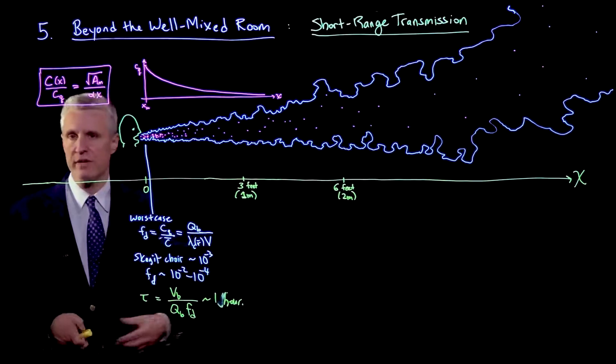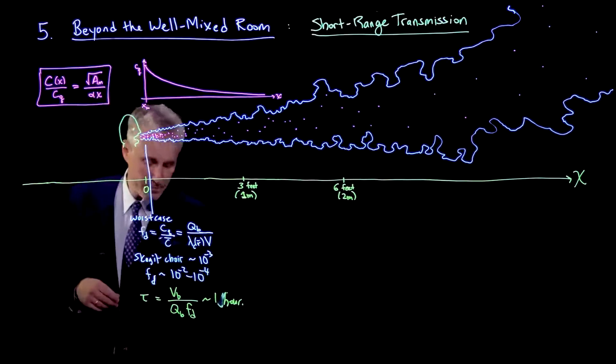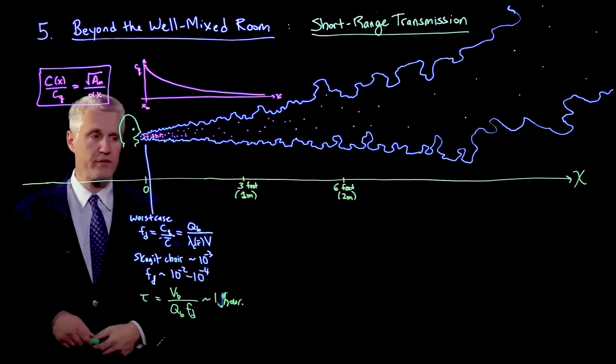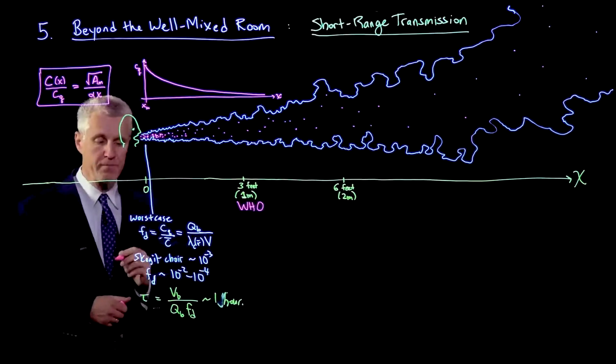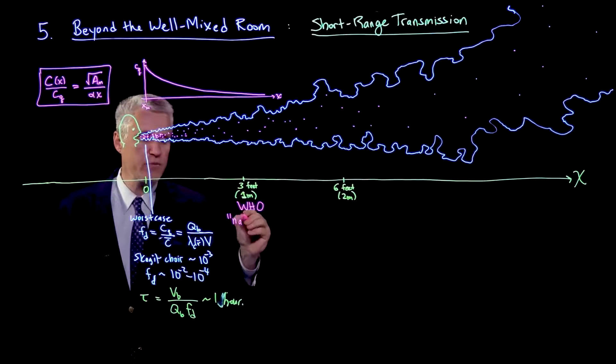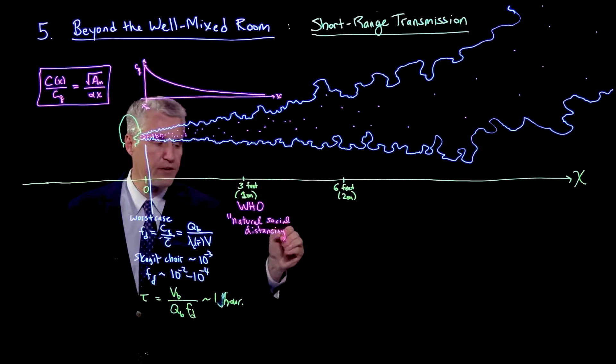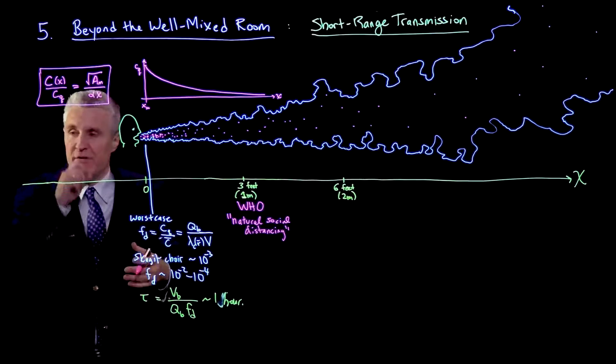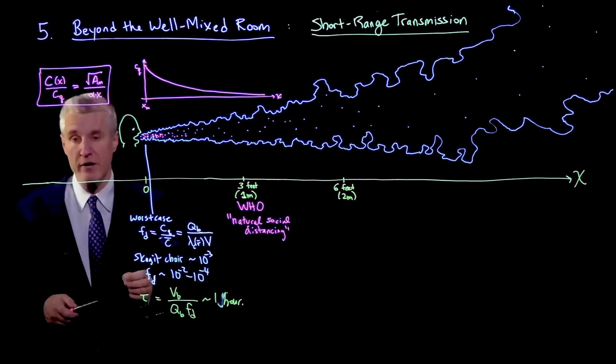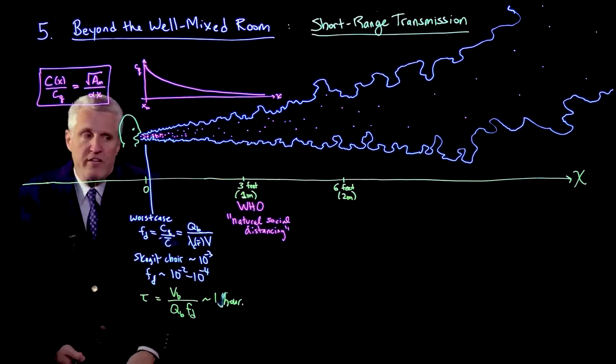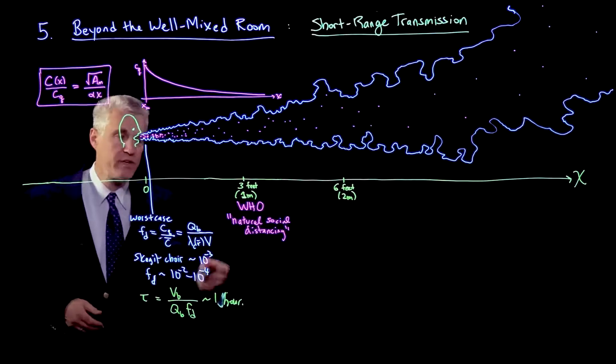It has to be longer range airborne aerosol transmission. But how much longer range? Let's consider important numbers: 3 feet and 6 feet. 3 feet corresponds to 1 meter, the social distancing guideline of the World Health Organization. I would also argue that 3 or maybe 2 feet is close to natural social distancing. Most people prefer a little space bubble and tend to stand 2 or 3 feet apart, except in cases where you're in a crowd like a nightclub or bar. But people tend to be about 3 feet apart.